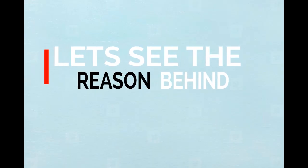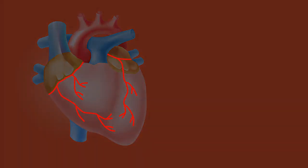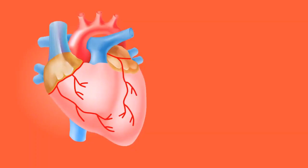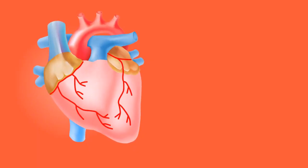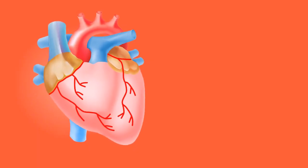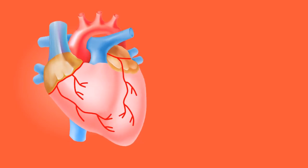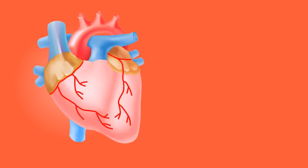So what is a heart attack? Here is a coronary artery. It supplies blood to the heart muscle. This blood supply keeps the heartbeat normal and maintains blood circulation.